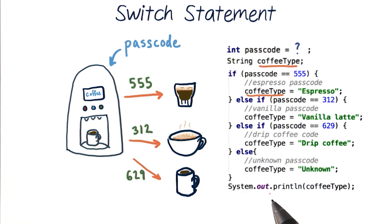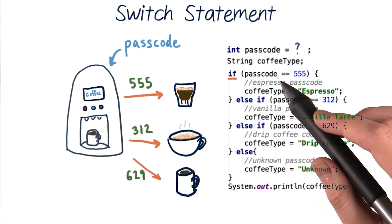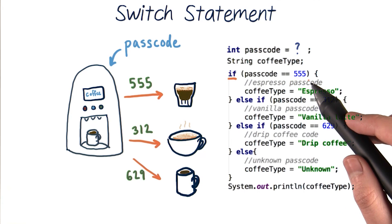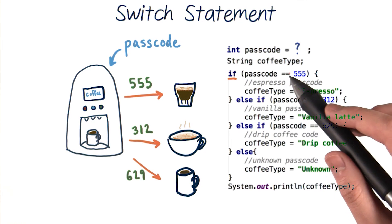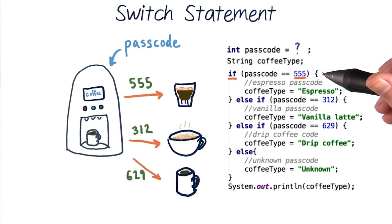Then at the very end of our code, we'll print out the value of coffeeType. So if we look at our first if in detail, it tests if our passcode is equal to 555. And we test for equality with this double equal sign. And the value 555 corresponds to our espresso passcode. Then, if this test condition is true, we'll enter our if block of code and set coffeeType to the value espresso. Then, because we've executed the code in our if, we'll skip down to the end curly brace of all these statements to our print line of code. And this will just print out espresso.